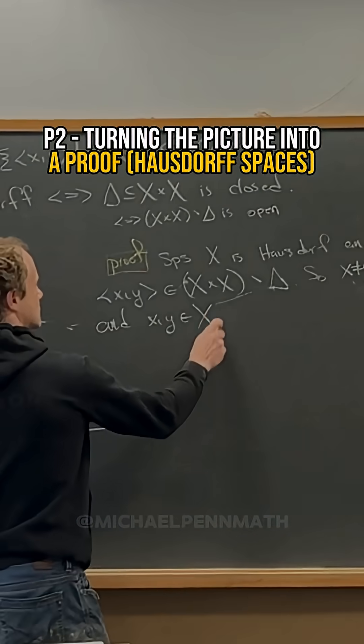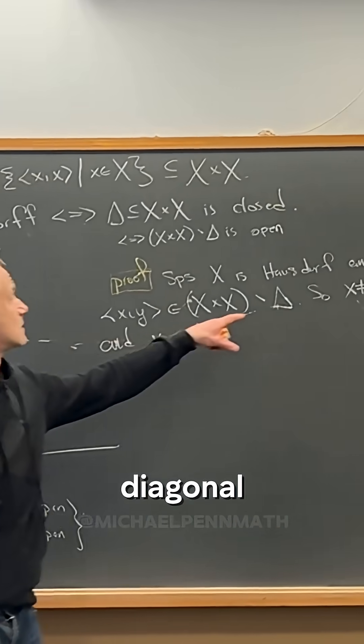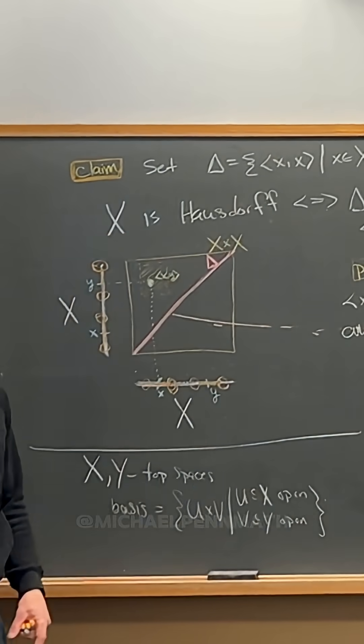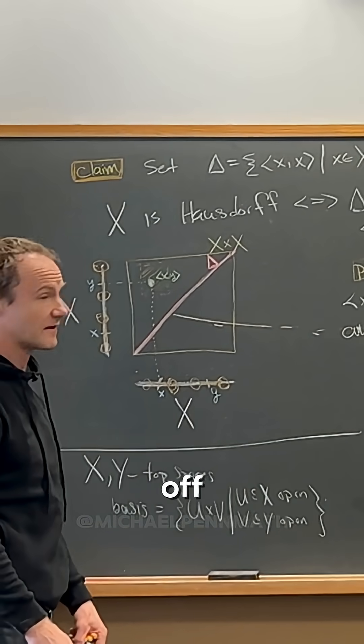How do we know that x is not equal to y? We're off the diagonal. Yeah, the diagonal is the place where everything, the two entries are the same, right? So we're off of that point.